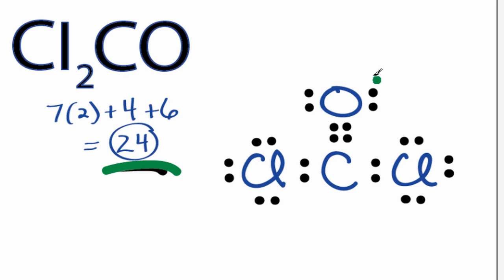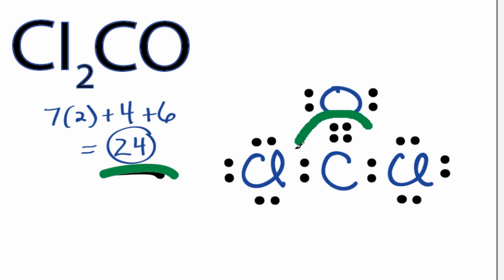We're still only using 24 valence electrons, but the oxygen still has an octet, and the carbon now has 8 valence electrons because of that double bond we formed with the oxygen. So we've used all 24 valence electrons. We've satisfied the octets on each of the atoms. So this is the Lewis structure for Cl2CO.